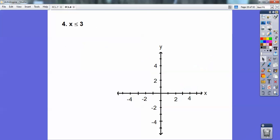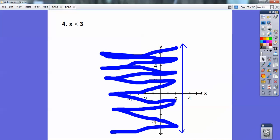Easy, huh? x equals 3 is a vertical line. So there's my vertical line, and to the left is going to be less than or equal to 3.